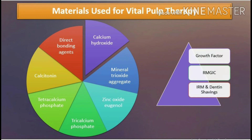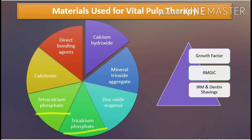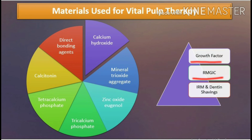Many materials have been employed as potential pulp capping agents. These include calcium hydroxide, mineral trioxide aggregate, zinc oxide eugenol, tricalcium phosphate, tetracalcium phosphate, calcitonin, direct bonding agents, growth factors, resin-modified glass ionomer cement, IRM, and dentin shavings.